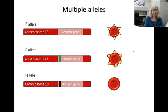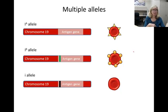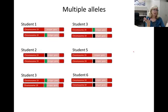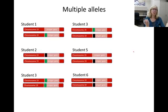Blood type is also an example of multiple alleles. There were three different alleles for the blood type gene. Any single person can only have two alleles because they have only two chromosomes. So no one person can have all three alleles. But a population of individuals, like students in a class, can have all three. Some genes actually have dozens and dozens of alleles, all based on different mutations in their DNA.